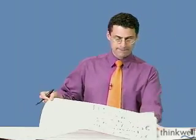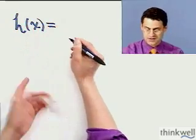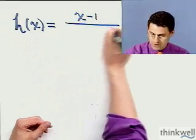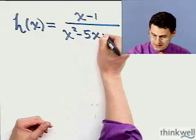Let's take a look at another example. I'll call this function h. I'm just trying to show you that you can call these things anything you want. This one's going to be called h of x, x minus 1 over x squared minus 5x plus 6.